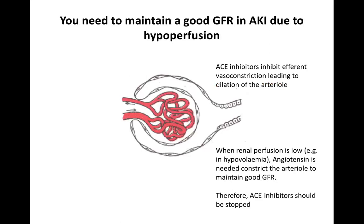It's important to understand why we stop ACE inhibitors in AKI. ACE inhibitors inhibit efferent vasoconstriction, leading to arteriole dilation. When renal perfusion is low, angiotensin is actually useful because it constricts the arteriole to maintain a good GFR. By stopping ACE inhibitors, you preserve angiotensin's ability to constrict the arteriole, maintain GFR, and continue adequate renal perfusion. This contrasts with the use of ACE inhibitors in chronic kidney disease, which we'll discuss shortly.